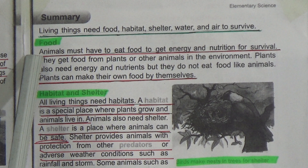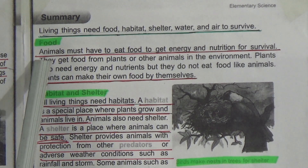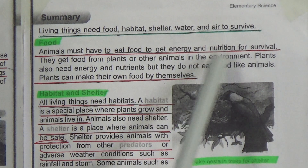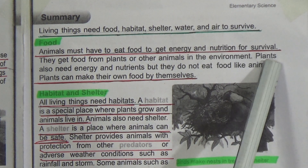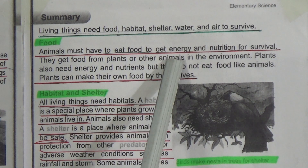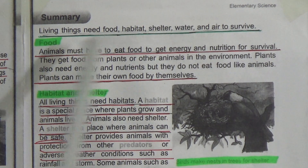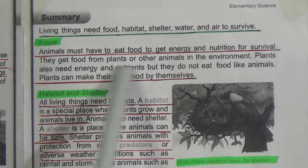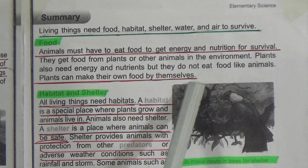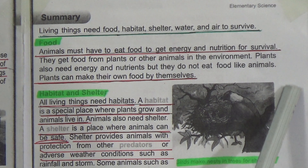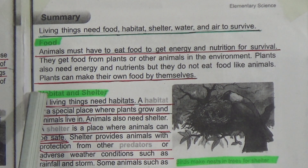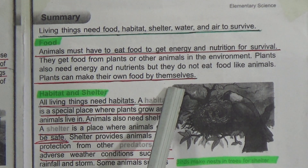Our next topic is food. Animals must have to eat food to get energy and nutrition for survival. Underline this line. They get food from plants or other animals in the environment. Plants also need energy and nutrition but they do not eat food like animals. Plants can make their own food by themselves. Underline this line.